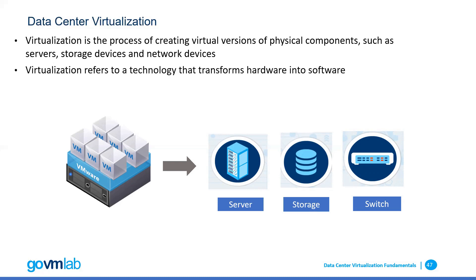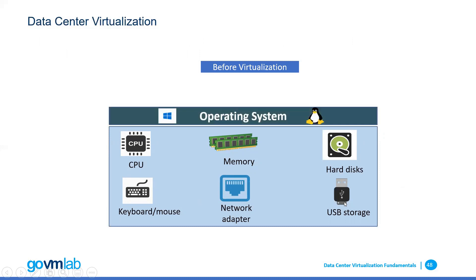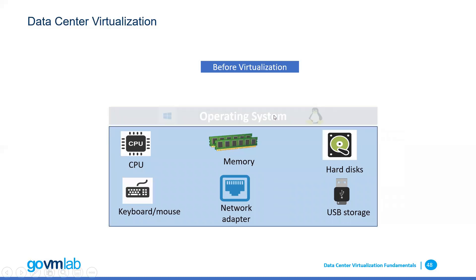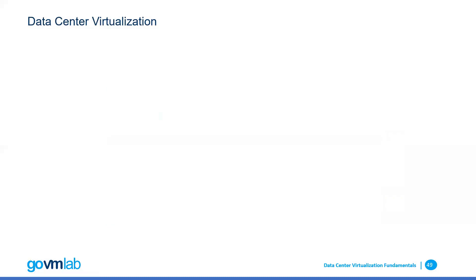Virtualization refers to a technology that transforms all of the hardware into software. If you see this slide, before virtualization, what we used to have was a hardware box with a CPU, memory, hard drives, keyboard, network adapter, and USB support. On top of that hardware, we used to install a general purpose operating system like Windows or Linux, and then on top of that operating system, we were running our technical applications. That was the way before virtualization.